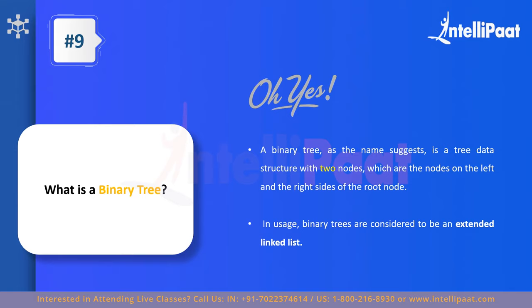Question nine: what is a binary tree? A binary tree has one primary root node that splits into two child nodes — one on the left and one on the right, hence 'binary.' Every single node can have at most two child nodes, and those can have two more, expanding exponentially. Binary trees provide significant advantages over linked lists and are considered an extended form of linked lists for navigating hierarchical data.